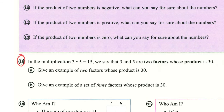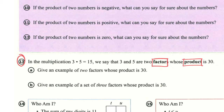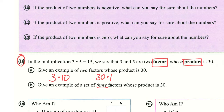Number 13 is a good one for looking at some vocabulary — factors and product. Product is the answer we get when we multiply, and factors are the numbers that we multiply together. Part A is asking to give an example of two factors whose product is 30. An example here could be three times ten equals 30, or 30 times one equals 30. In Part B, we're going to give an example of three factors whose product is 30. So maybe five times three, which is 15, and then if I multiply that by two, I would have 30.